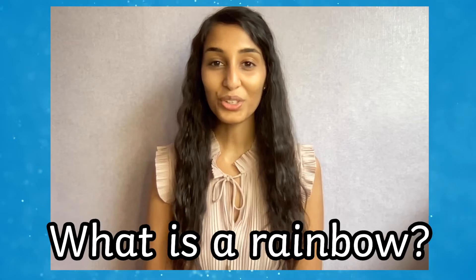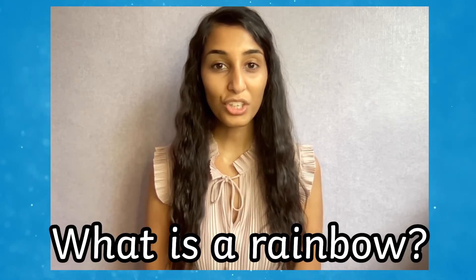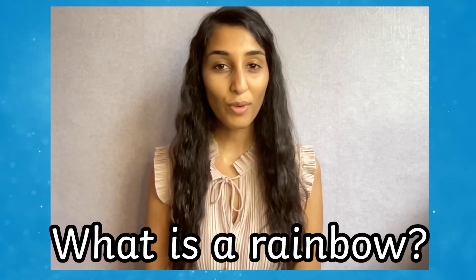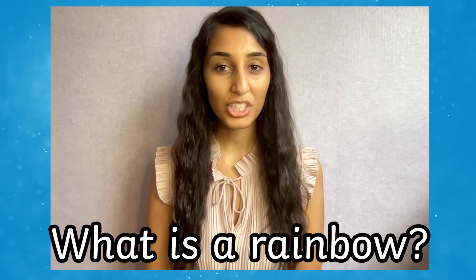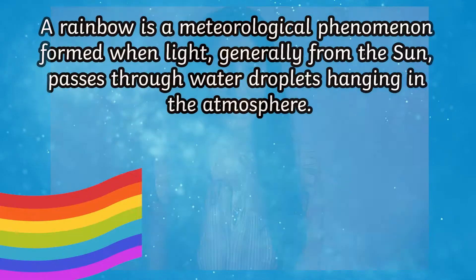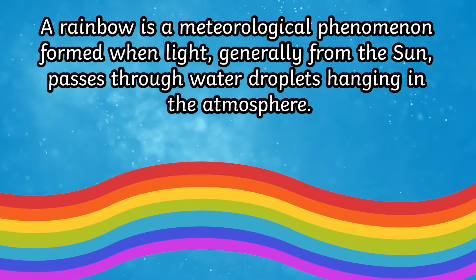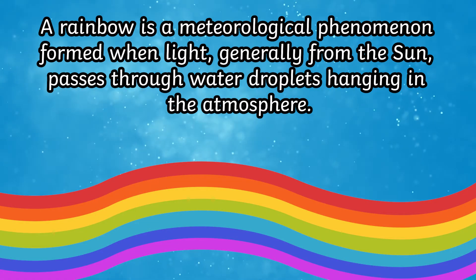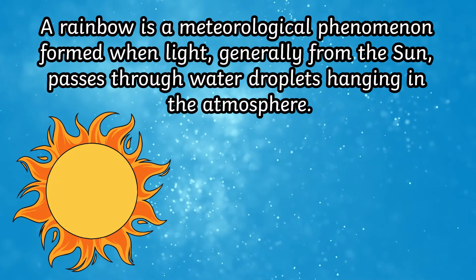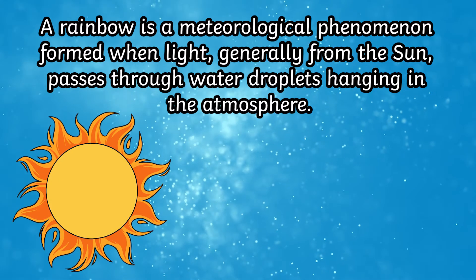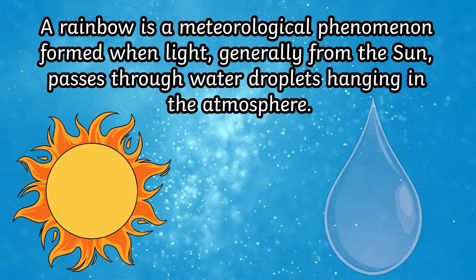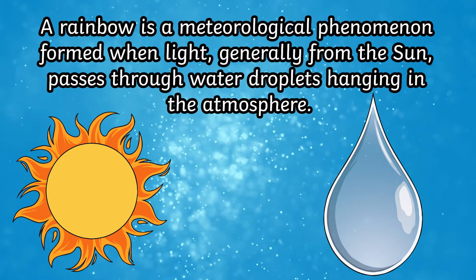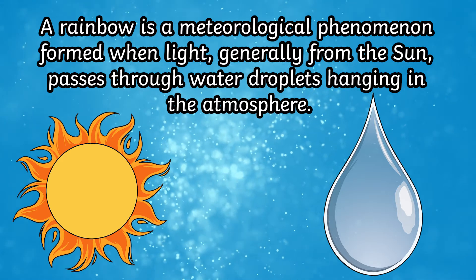Why don't you start off by asking your children what a rainbow actually is? A rainbow is a meteorological phenomenon formed when light, generally from the sun, passes through water droplets hanging in the atmosphere.